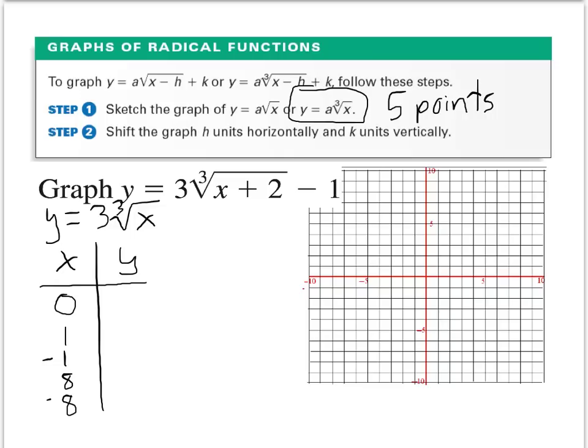The cube root of 0 is 0; times 3 gives 0. The cube root of 1 is 1; times 3 gives positive 3. Plugging in negative 1 gives negative 3. The cube root of 8 is 2; times 3 gives 6. And negative 8 gives negative 6.